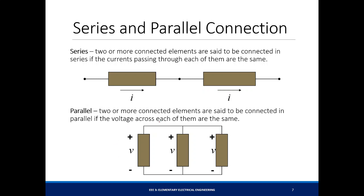For parallel connections, two or more connected elements are in parallel if they have the same voltage across them. To verify, check if they are both connected to the same nodes. In this case, three elements are connected to node A and node B — since all are connected to the same two nodes, these three elements are in parallel.